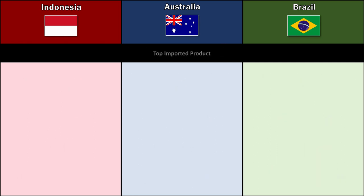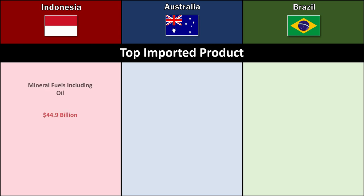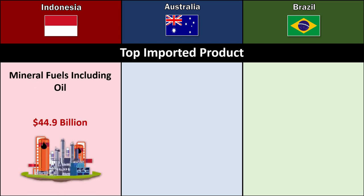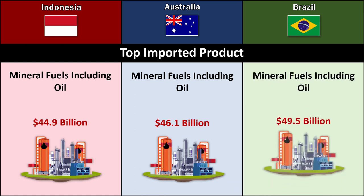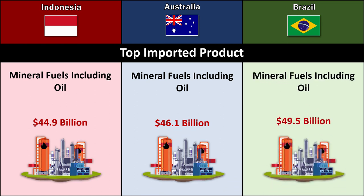Top Imported Product: Mineral Fuels Including Oil — Indonesia $44.9 billion, Australia $46.1 billion, Brazil $49.5 billion.